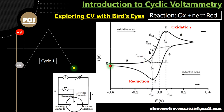At the onset, the HOMO-LUMO electronic transfer concept applies — electrons must reach a sufficient energy level for the transfer to take place. Once the reaction starts, electrons are continuously generated or consumed, so the current increases rapidly, showing an approximately exponential rise. The current then reaches a maximum.